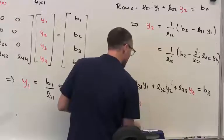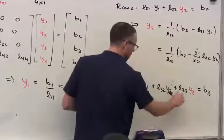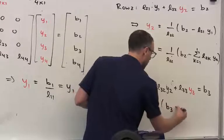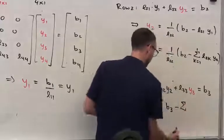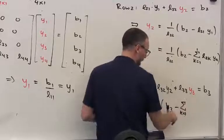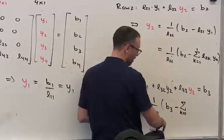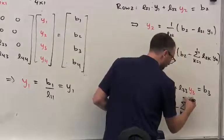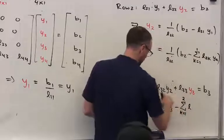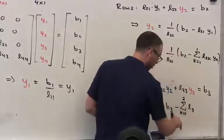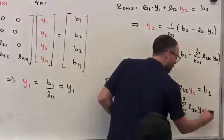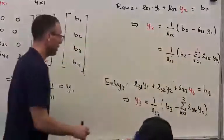My unknown Y3 is going to be 1 over L33 B3 minus the sum from start at the first row, go to the row right before the diagonal. What's the row right before the diagonal there? Sorry, the column, you have to be all right. 2. 3. Must be 3. How could you have told it was 3? Because we're in our entry 3. L3K YK. All right.